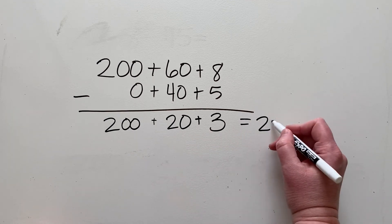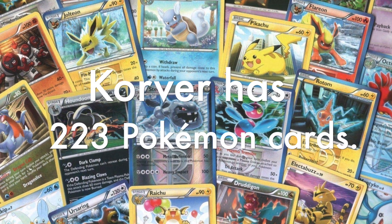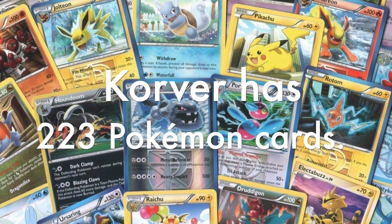Again, our problem was that Korver has 268 Pokemon cards, and how many cards will he have left if he gives 45 of them to his cousin? We know that Korver has 223 Pokemon cards.